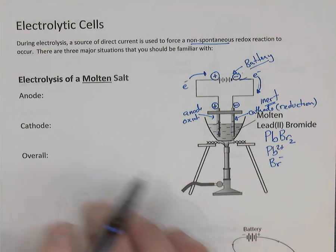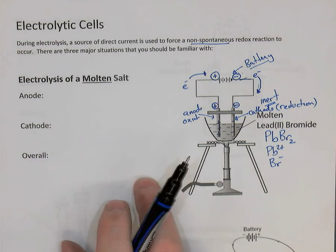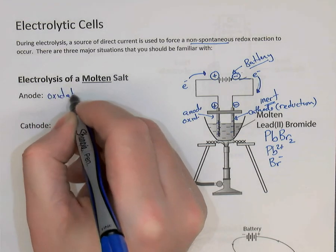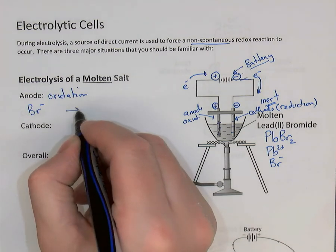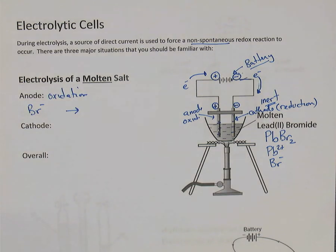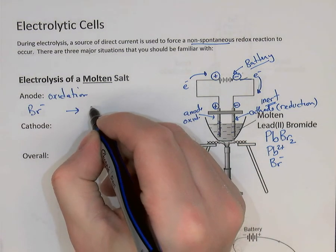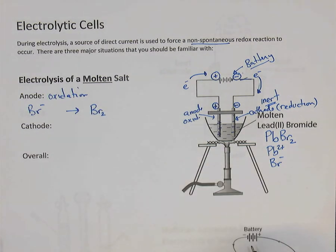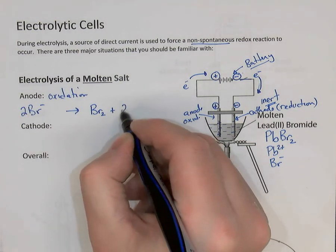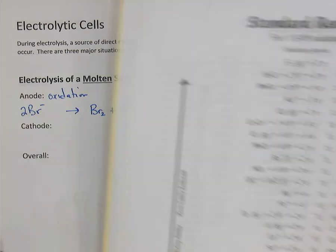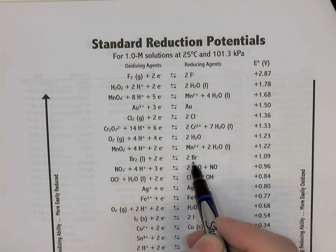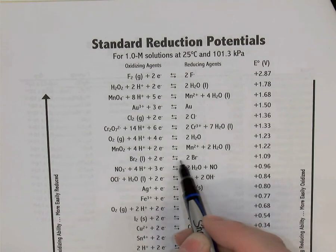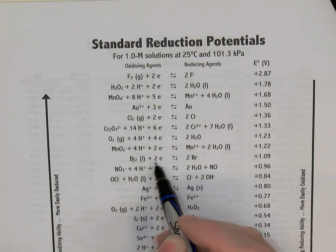Let's write the balanced equations for the anode, cathode, and overall. At the anode, oxidation occurs and bromide ions are pulled there and become oxidized. Bromide loses electrons to become neutral bromine — Br2, one of the diatomic elements. To balance: two bromides lose two electrons. You can also use your standard reduction potentials chart as an aid: find bromide ions and write the equation backwards as an oxidation reaction.